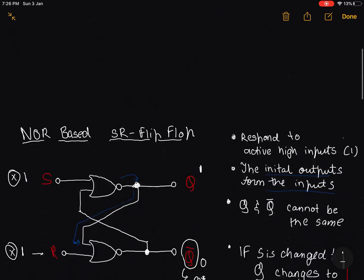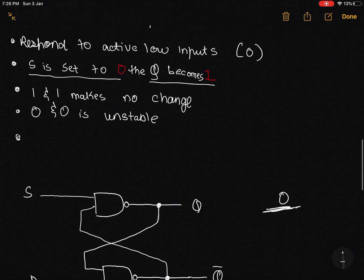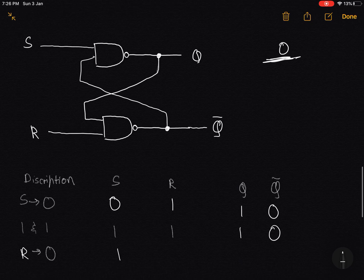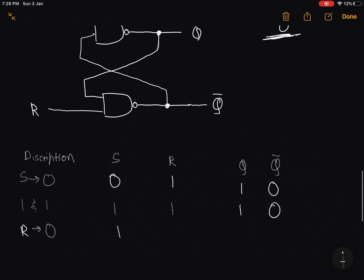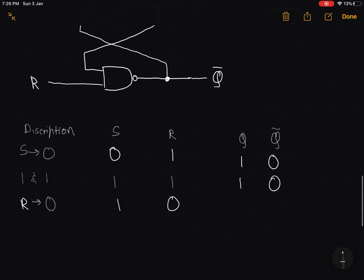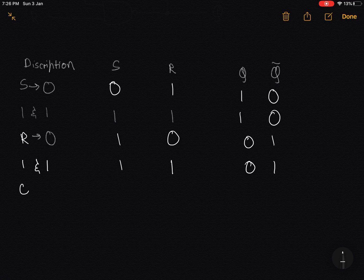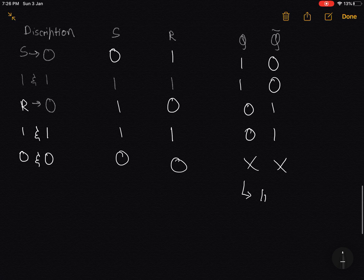The one above would respond to inputs as 1. This responds to inputs as 0. That is why this is called an active low input circuit. So when we input 0, if R is 0 in this case, the Q will also turn to 0. Again we can take it to be 1 and 1, we would get the same values. In this case, 0 and 0, this is the invalid state for the same reasons I mentioned before.